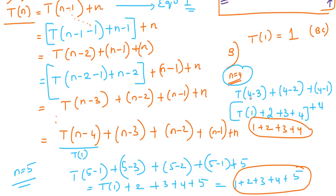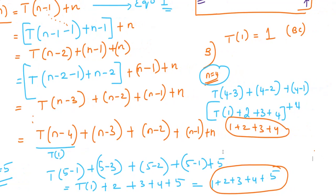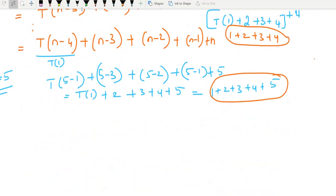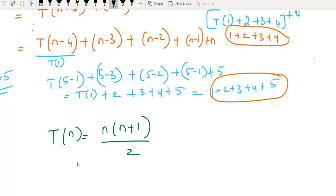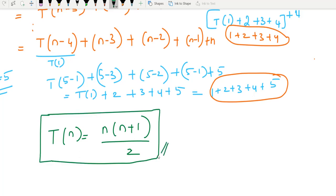How do we write the answer in terms of T(n)? It is going to be n(n+1)/2. That is the formula. So T(n) = n(n+1)/2. If n=5, we get the correct result; if n=4, we also get the correct result. We conclude that T(n) = n(n+1)/2.